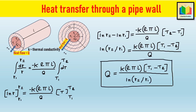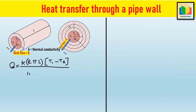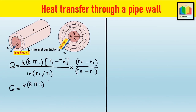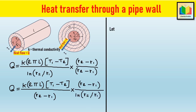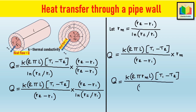Since the radius increases from the inner to the outer wall the heat transfer area also increases, so it is necessary to adjust using the log mean cross-sectional area A_m. Multiplying numerator and denominator by (r2 − r1) and rearranging to introduce r_m, where r_m = (r2 − r1) / ln(r2/r1), the final equation becomes: Q = k·(2π·r_m·L)·(T1 − T2) / (r2 − r1).